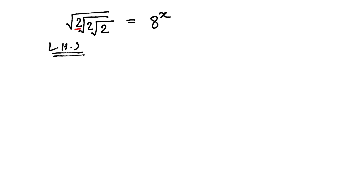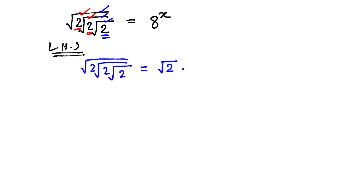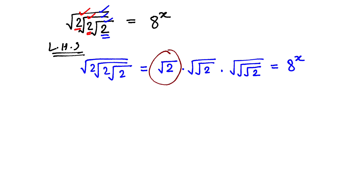If you can see on the left hand side, the first 2 has one root, the second 2 has two roots, and the third 2 has three roots. If we expand this expression, the first 2 is under only one root, the second 2 is under two roots, and the third one is under three roots, and that is equal to 8 raised to the power x. Now, under root 2 can be written as 2 raised to the power 1 by 2.